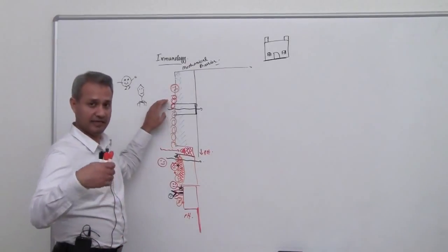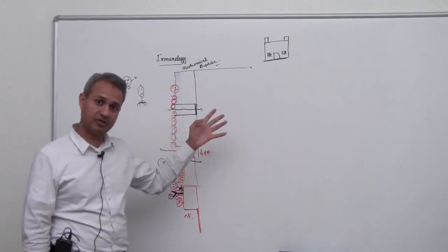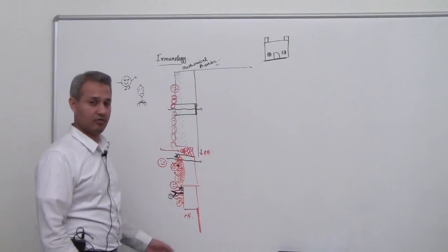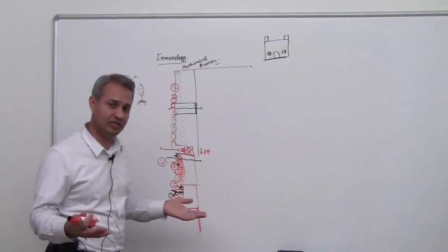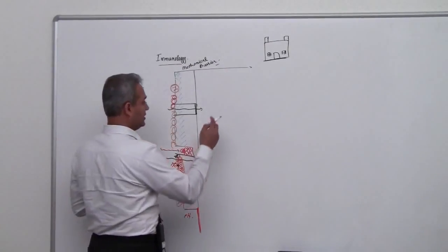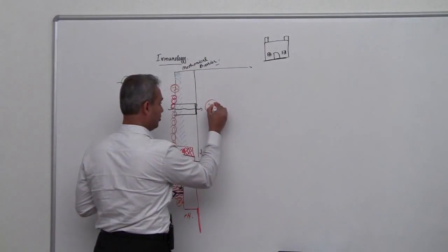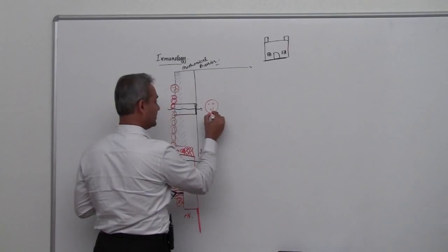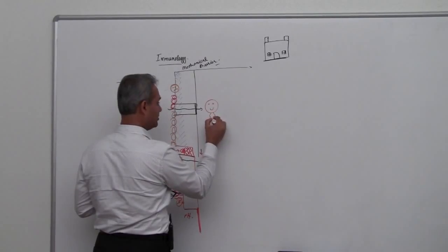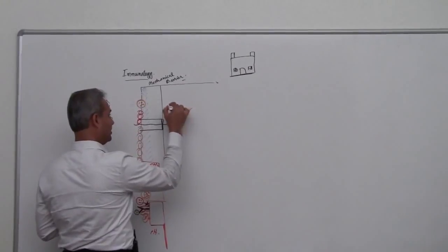That could be an injury to the barrier, that could be a stronger version of the bacteria, that could be just bad hygiene of a person, so many reasons. But at the end of the day, that virus or bacteria or pathogen has happened to enter our body. So now he's having a big party here.